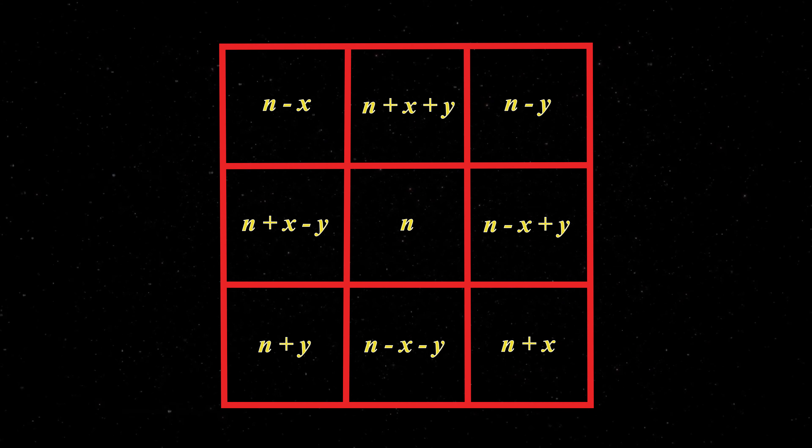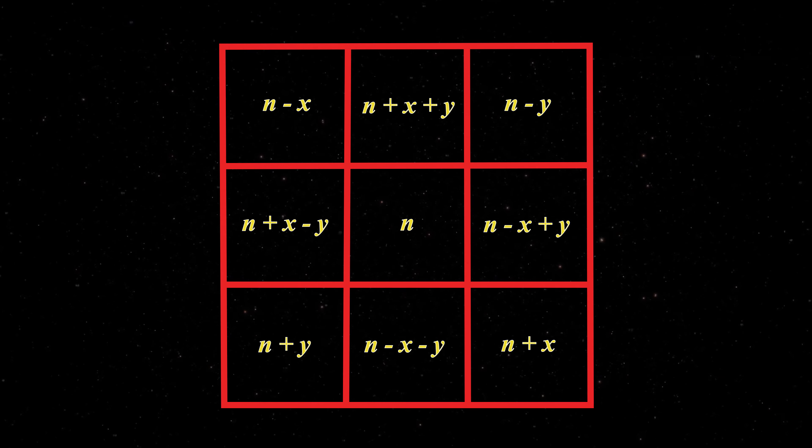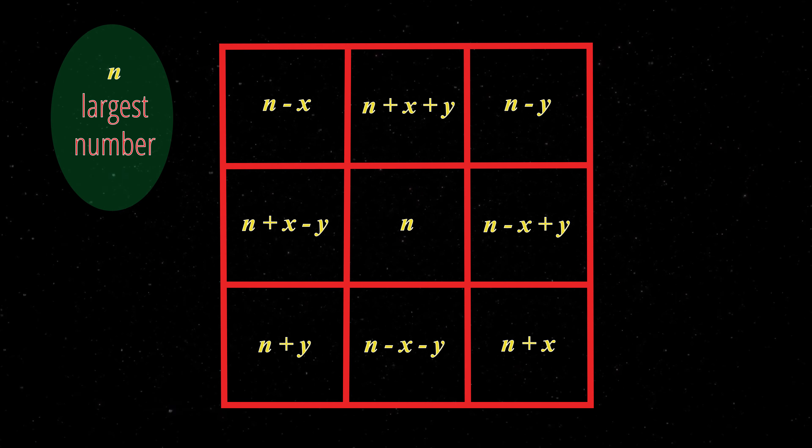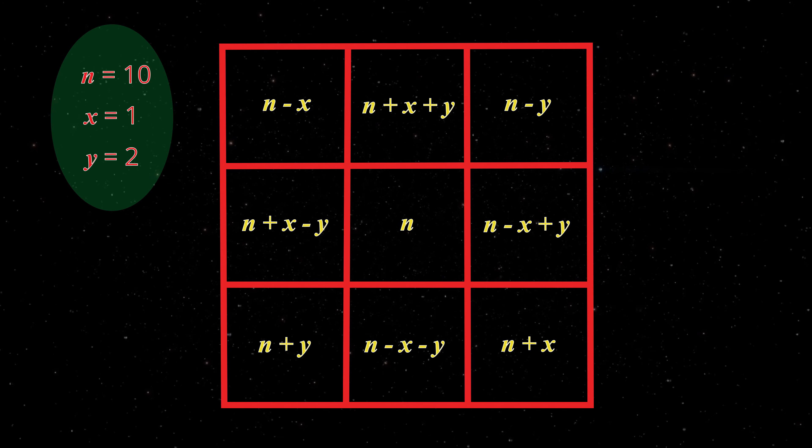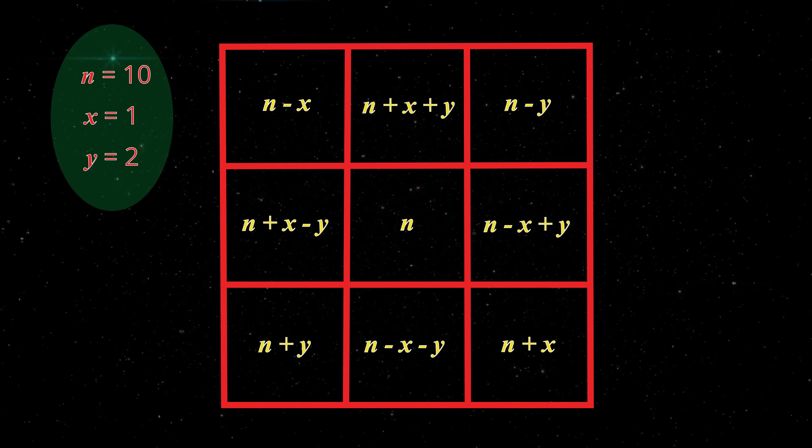Let's do an example. First, choose three numbers for n, x, and y. Make n the largest of the three numbers. In this example, n equals 10, x equals 1, and y equals 2.